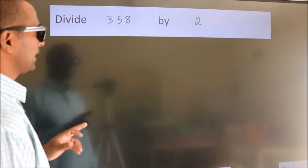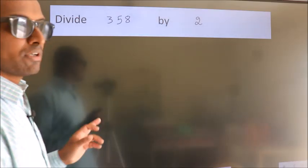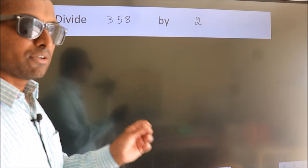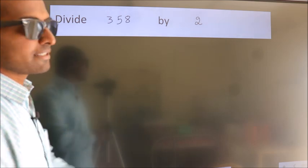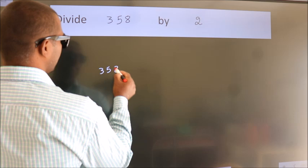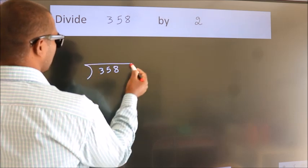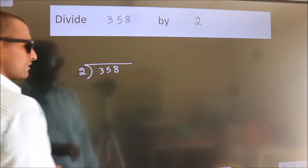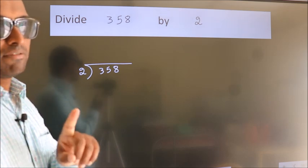Divide 358 by 2. To do this division, we should frame it in this way. 358 here, 2 here. This is your step 1.